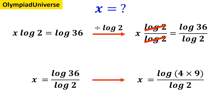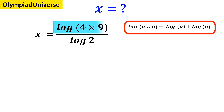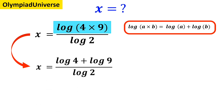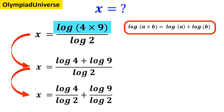We'll write this expression as x equals log of 4 times 9 over log of 2. Based on the logarithm rules, log of a times b is equal to log of a plus log of b. So we rewrite the expression highlighted in blue as x equals log of 4 plus log of 9 over log of 2. This equation simplifies to x equals log of 4 over log of 2 plus log of 9 over log of 2.